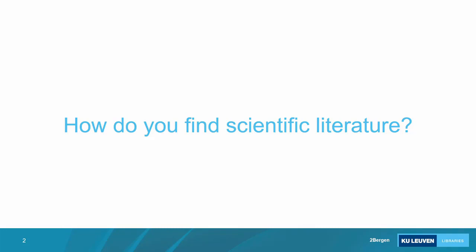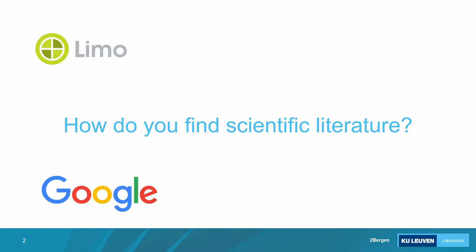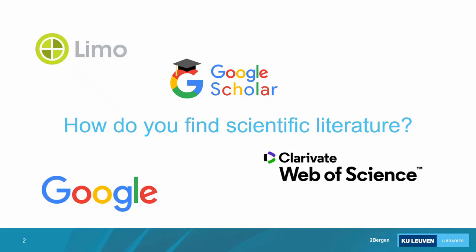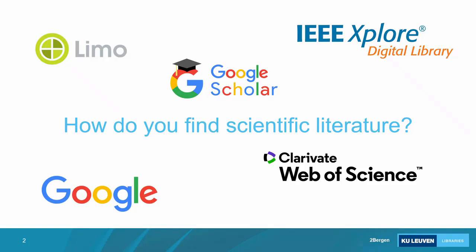What are we going to talk about today? It's how you can find scientific literature. As a starting point, please raise your hands: who looks for literature in Limo? About a third to a quarter. Who uses Google? More people. Specifically Google Scholar? Most of you. Web of Science? One or two people. IEEE Explorer? A bit more.